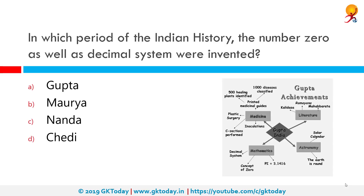In which period of Indian history was the concept of zero as well as the decimal system invented? The correct answer is the Gupta period. This period is called the golden age of India and was marked by extensive inventions and discoveries in science, technology, engineering, art, dialectic, literature, logic, mathematics, astronomy, religion and philosophy, crystallizing what is generally known as Hindu culture today. It was during the Gupta period that Aryabhatta was present and the discovery of the number zero occurred.